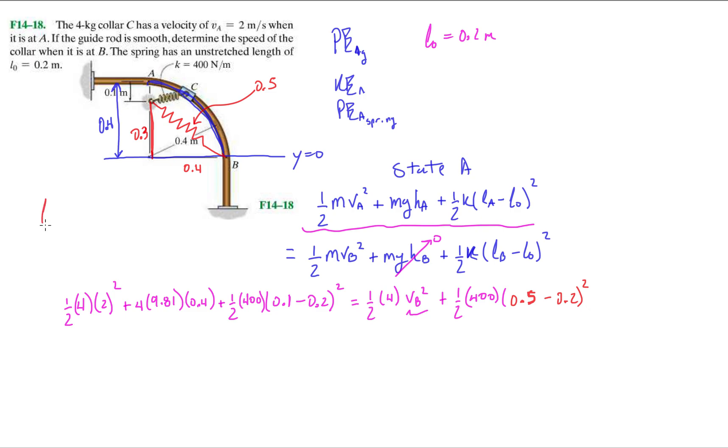Minus the initial length, which is 0.2 squared. If you want to do this out, you can say length of B is going to be Pythagorean theorem: 0.3 squared plus 0.4 squared, and you should end up with 0.5. Let's crunch the numbers here. On the left-hand side, all of this equals 25.696 equals 2 VB squared plus 18. Isolating VB, we should end up with 1.96 meters per second. That's it. That's the end of that problem.